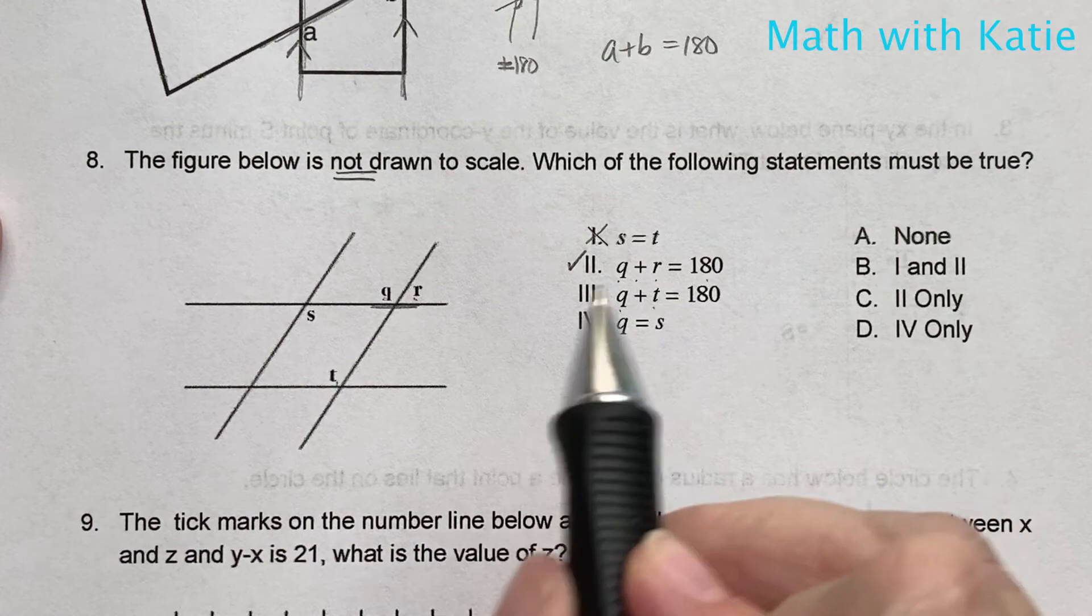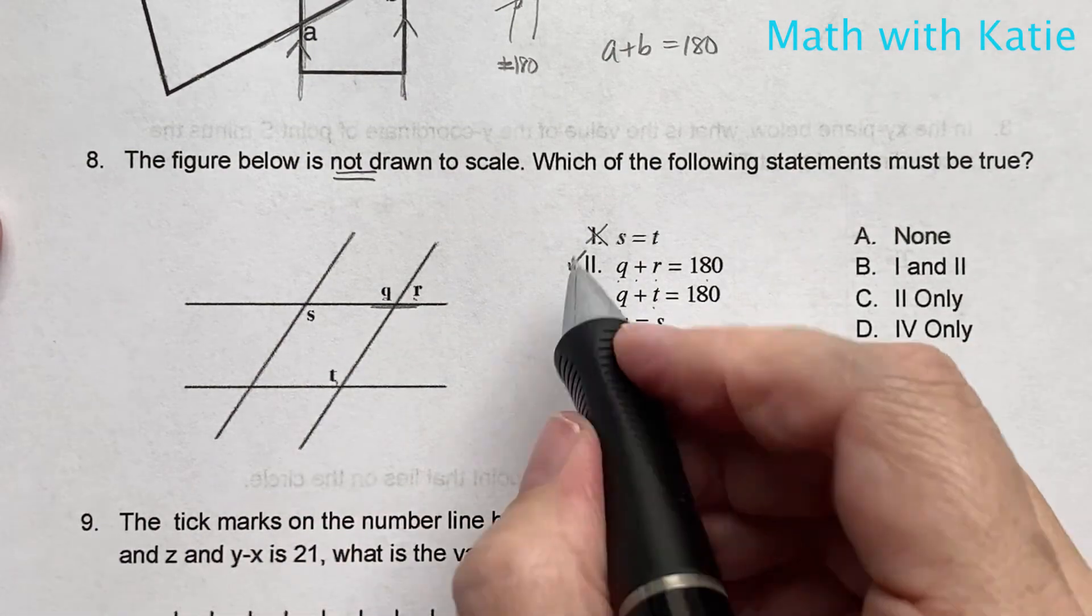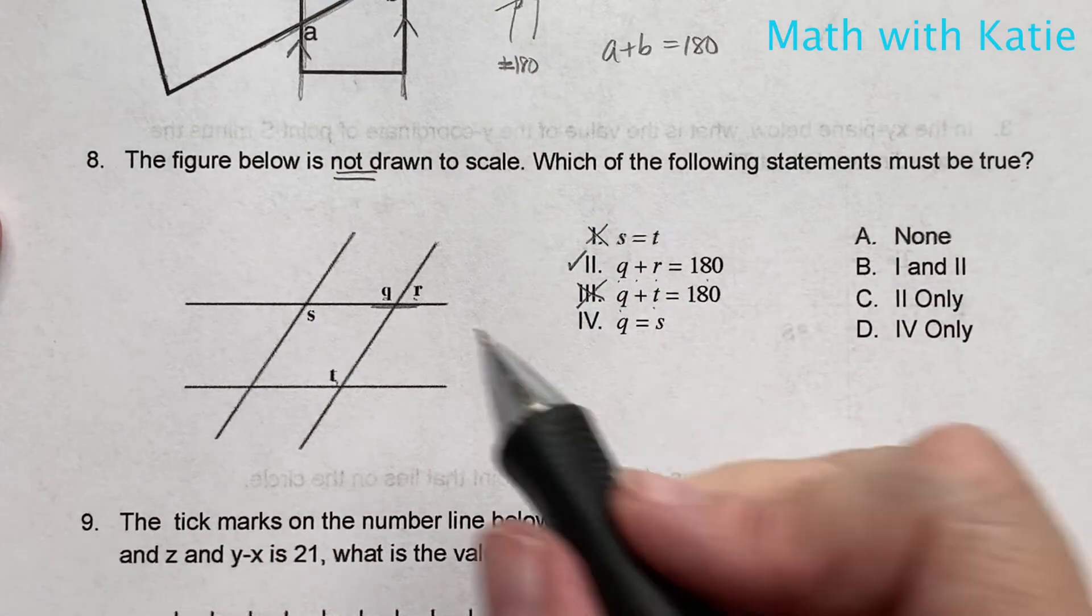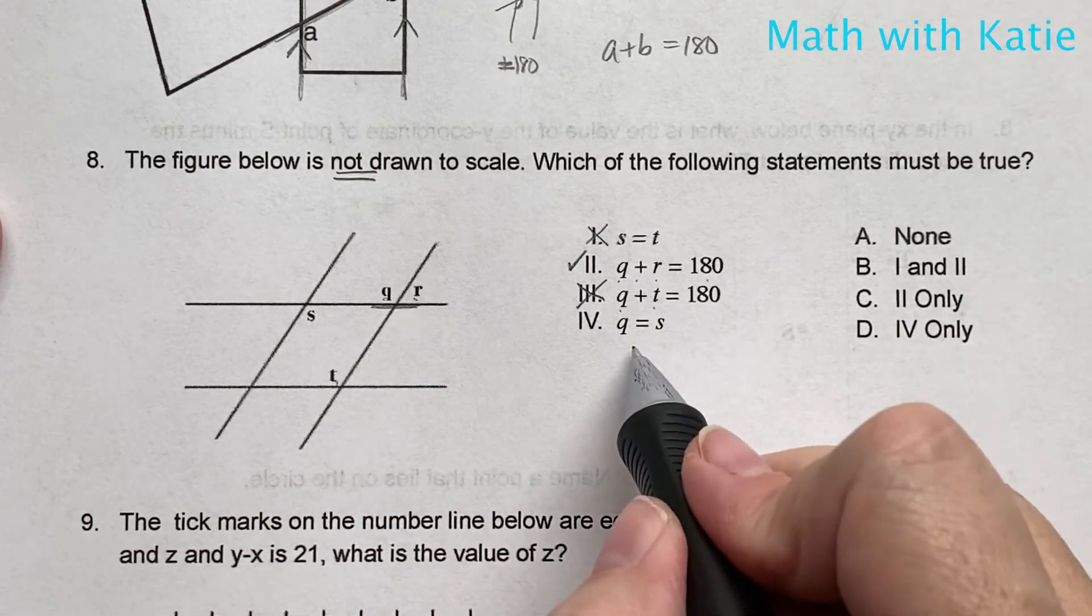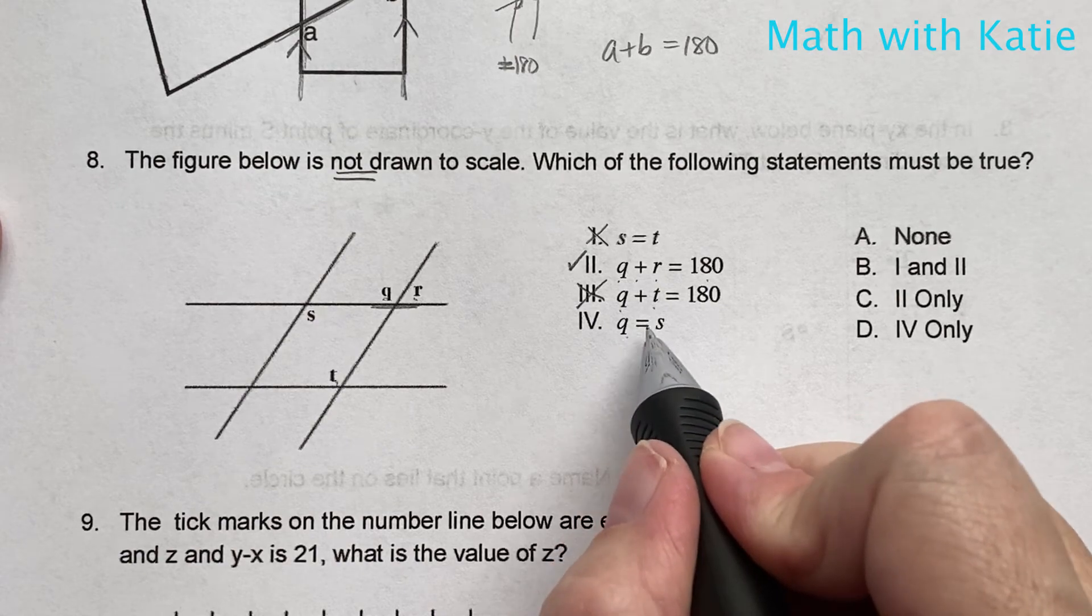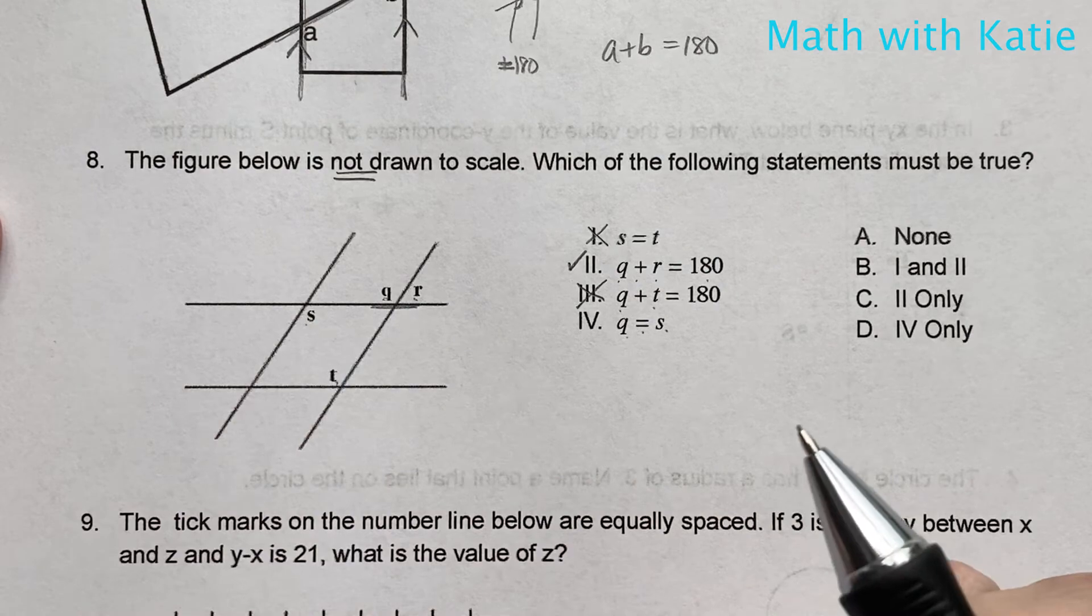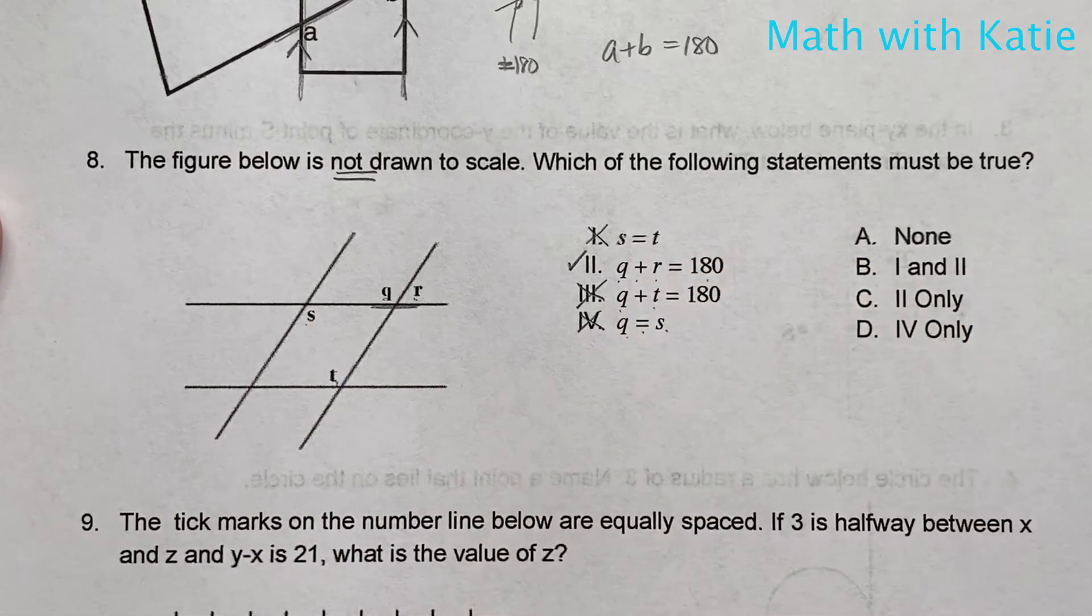Q plus t equals 180. Well, again, no. We can't assume that. Q equals s. Now, if these were parallel lines, that would be correct, but we don't know that they are parallel lines. So our answer is C, two only.